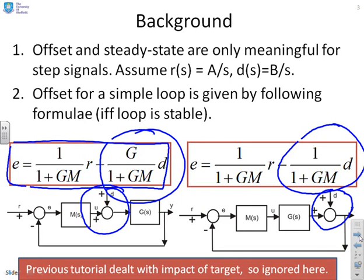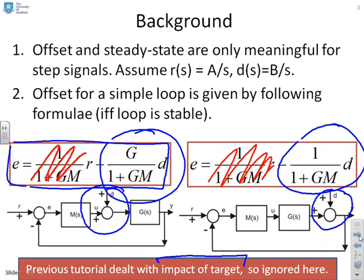At the bottom there's a note in the red box — we're not going to include or consider the part that depends on R. We'll cross that out because we did that in the previous tutorial and it's only superposition, just adding things together. You've got the formula if you ever need to do that. So we're going to focus solely on what impact the disturbance has, and we're going to assume that the disturbance can be represented as a step signal — a signal with some form of steady state.